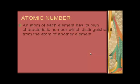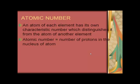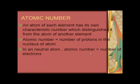Atomic number: An atom of each element has its own characteristic number which distinguishes it from the atom of another element. Atomic number is equal to the number of protons in the nucleus of an atom. In a neutral atom, atomic number is equal to the number of electrons.